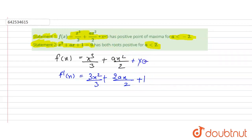So f'(x) = 3x²/3 + 2ax/2 + 1. This simplifies to f'(x) = x² + ax + 1.